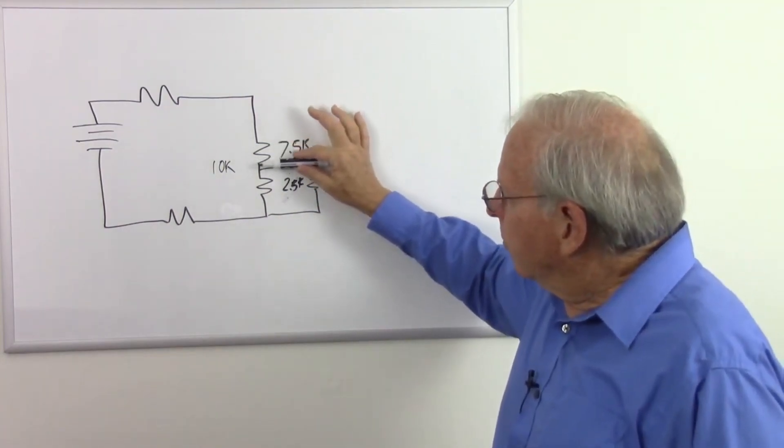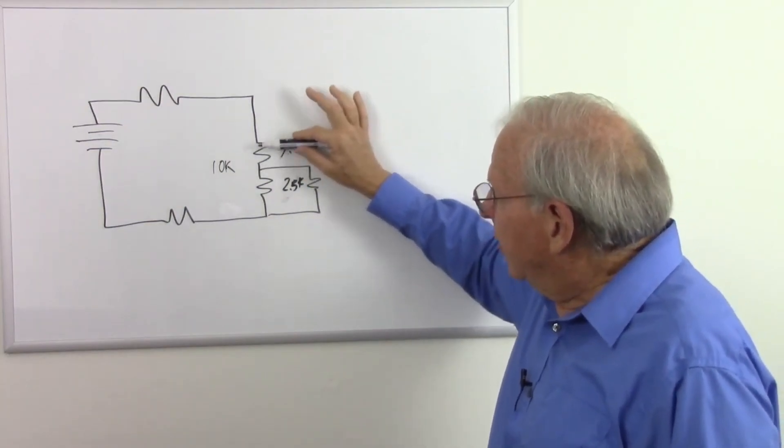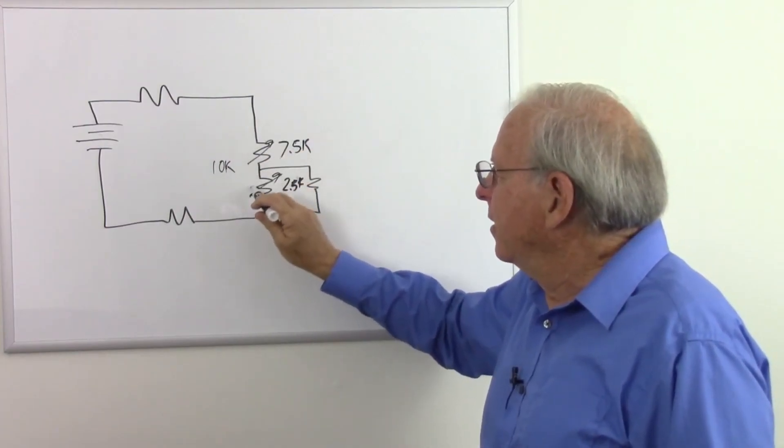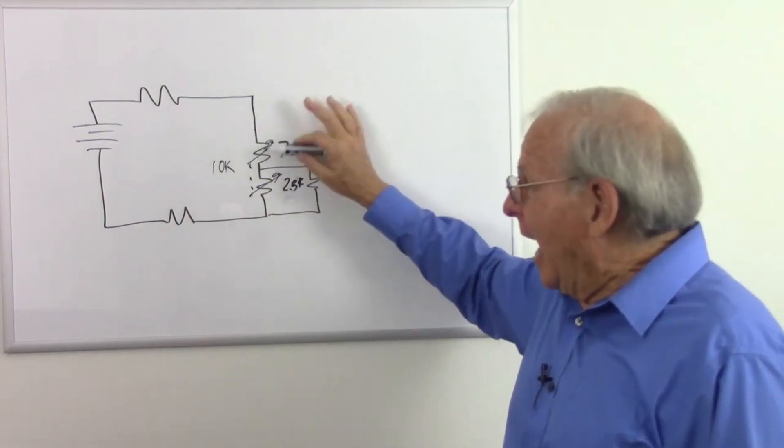And so the variable resistor, or should I say the potentiometer, acts as a split off. And these two resistors basically become ganged variable resistors. So that's what the potentiometer acts like.